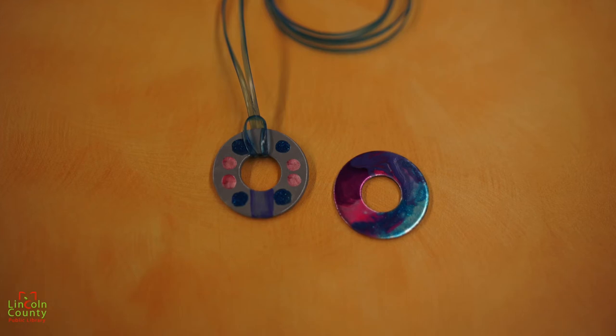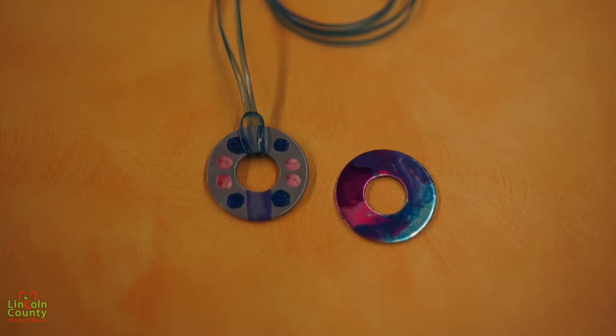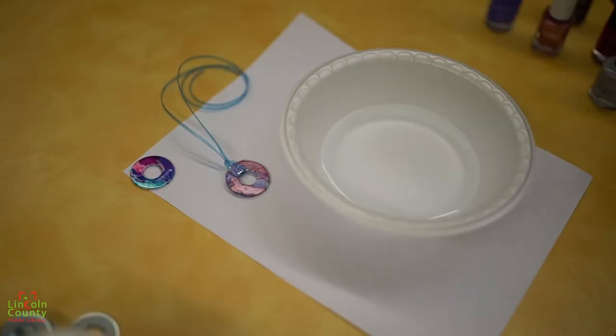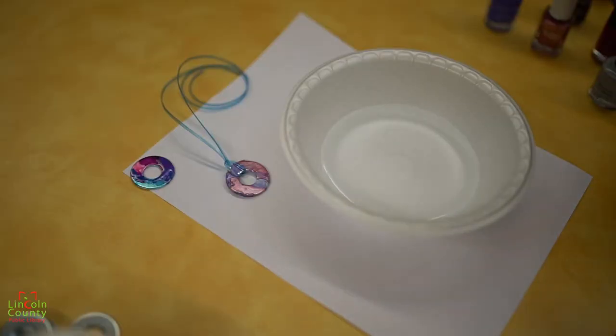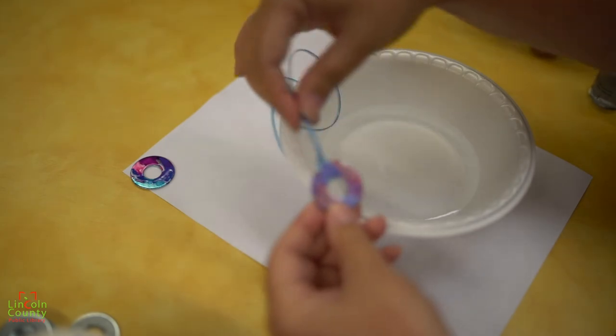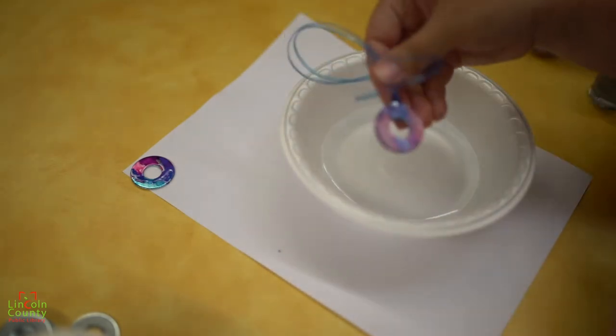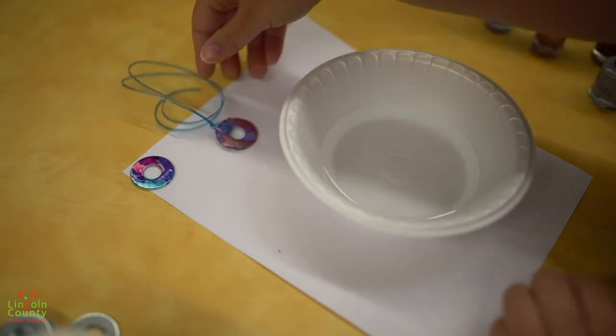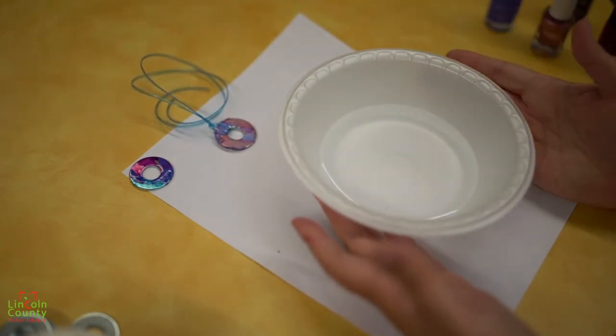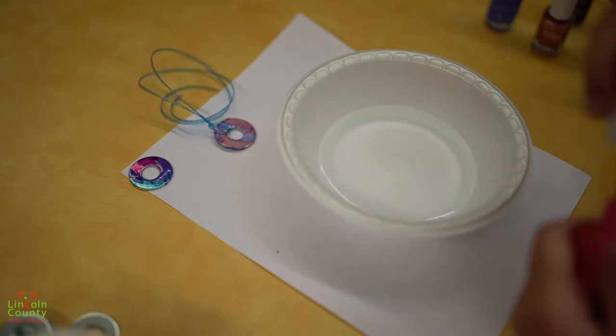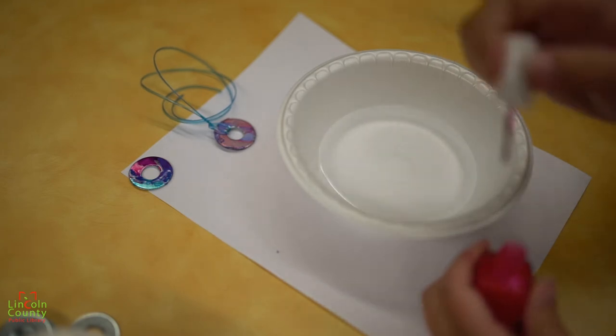That way you can put the ribbon or cord around it in order to make it a necklace. All right, and our final one is to make a washer necklace with the marbling of the nail polish. So to do this you will need a bowl or a little cup of water and you will need some nail polishes that will not bead or clump when you drop it in water. We want it to spread.